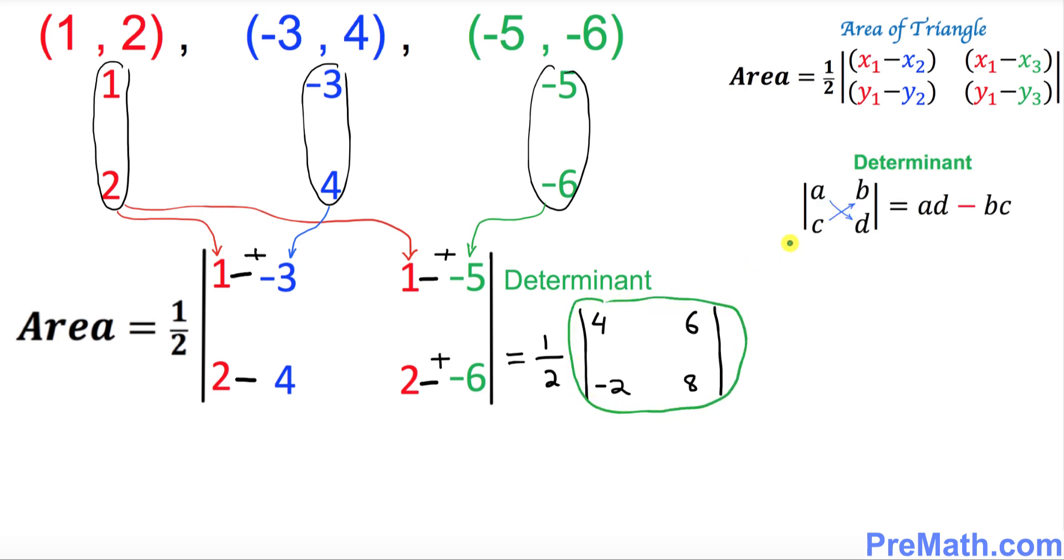And now we're gonna find the value of this determinant by using this fact over here by just simply criss-crossing. So let's go ahead and do that one over here. So that's gonna be simply I want you to cross multiply this one. That is going to be 4 times 8 is 32. I want you to put down 32.